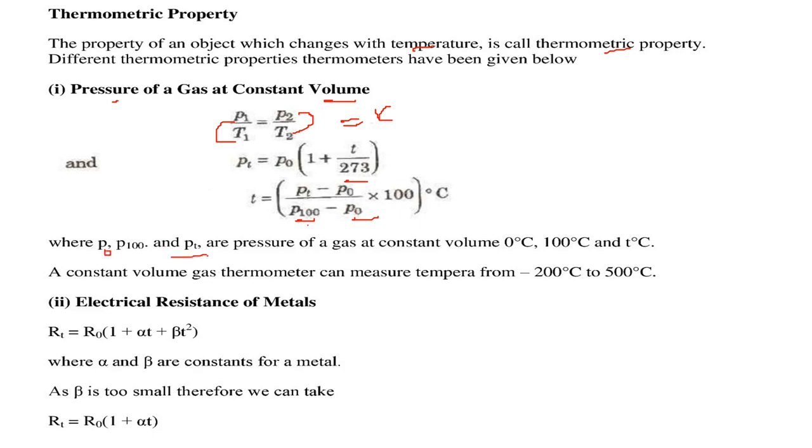And Pt is of course, the pressure of a gas at T, means constant volume at T degree centigrade. The constant volume gas thermometer can measure temperature from this range to this range.